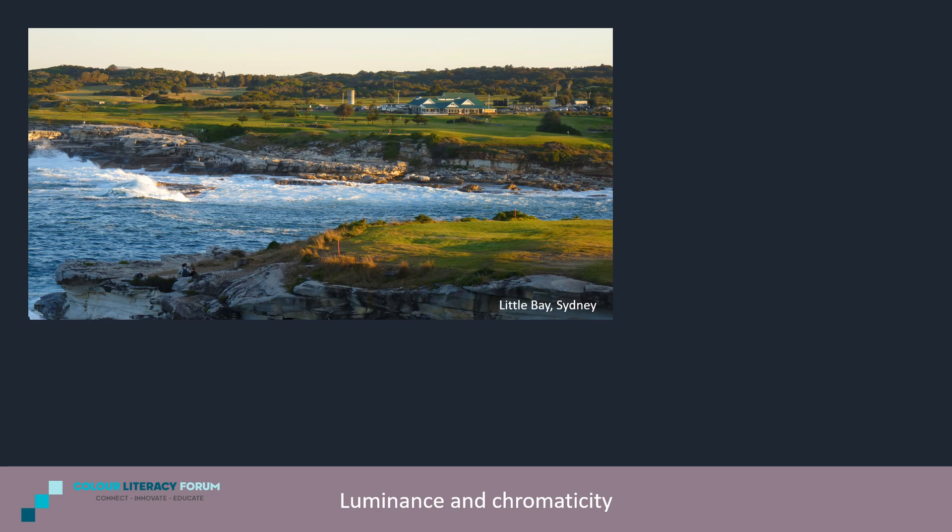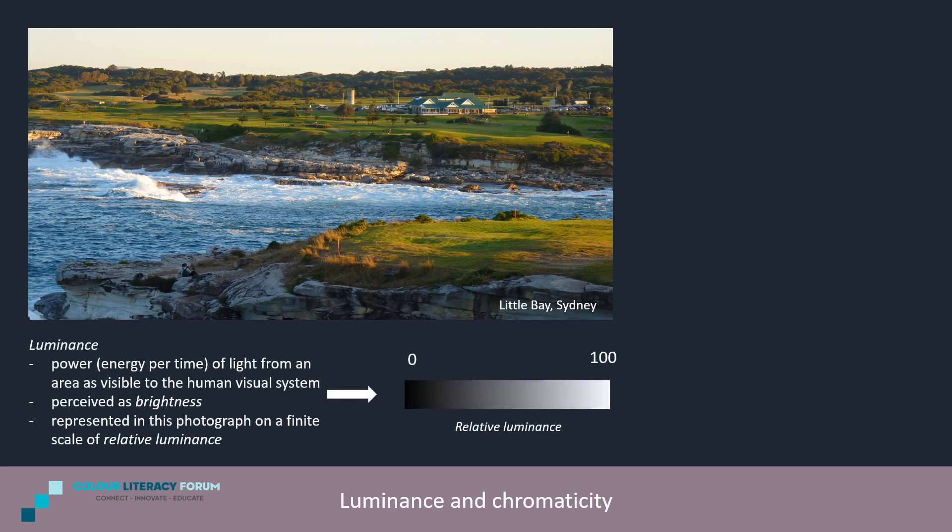I'll begin with two concepts that are essential if you want to understand what colour is a perception of. Luminance is the intensity of the light from an area as visible to the human visual system — that is, the power of the visible wavelengths, weighted according to how visible light of each wavelength is to us.